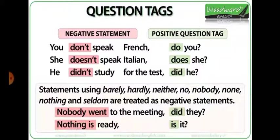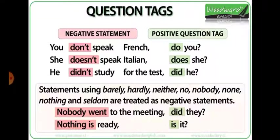Statements using negative words such as 'barely,' 'hardly,' 'neither,' 'no,' 'nobody,' 'none,' 'nothing,' and 'seldom' are treated as negative statements. If those words appear in the statement, the question tag will be positive. For example: 'Nobody went to the meeting, did they?' The word 'nothing' also makes a statement negative: 'Nothing is ready, is it?'